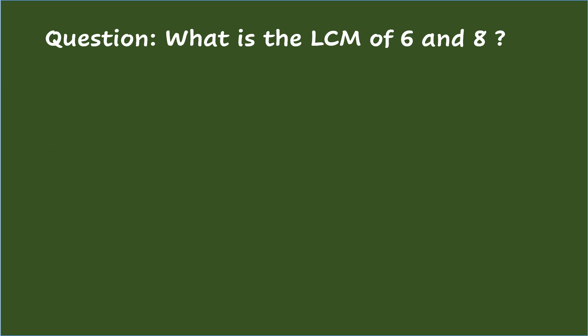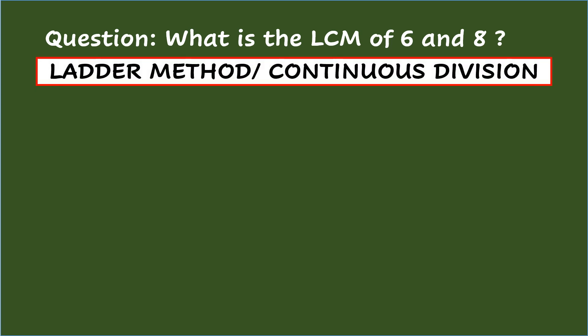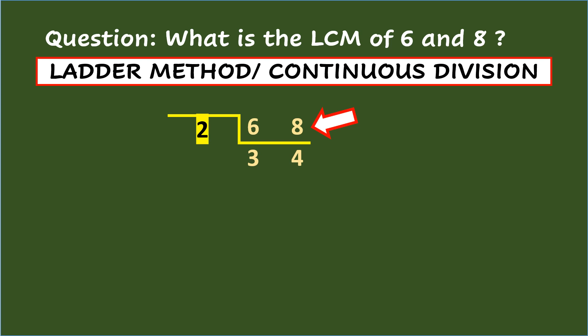The third way of getting the LCM of the numbers is with the use of the ladder method, or continuous division. In this method, you will divide the given numbers continuously using prime numbers. For the question — what is the LCM of 6 and 8 — the first step is to write the given numbers in the topmost ladder. Then, divide evenly any or all of the given numbers using the smallest prime number, which is 2. Dividing the first row: 6 divided by 2 is 3, and 8 divided by 2 is 4. Be sure to put the answer below the given numbers that you are dividing.